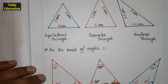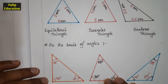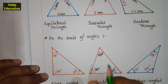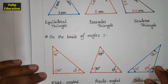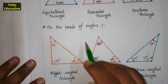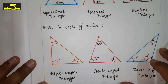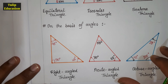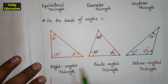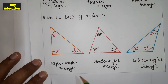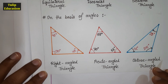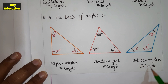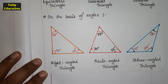Next we will discuss triangles on the basis of angles. On the basis of angles, triangles are classified into three types: one is the right angle triangle, another one is the acute angle triangle, and finally the obtuse angle triangle.